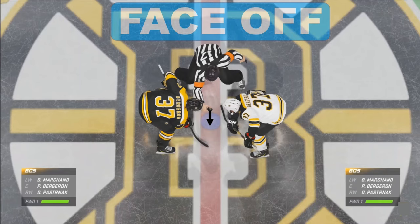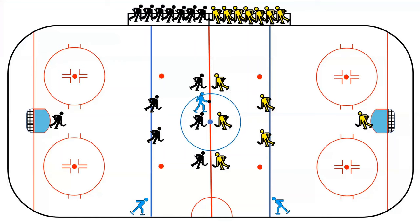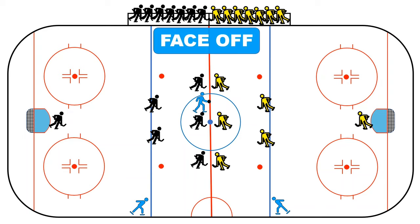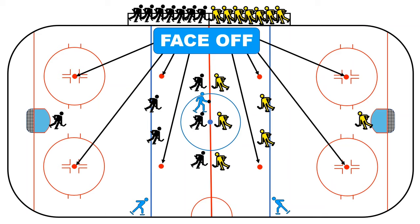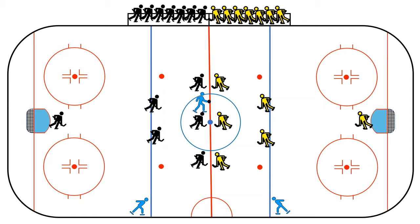There are multiple spots on the field where a face-off can happen. The eight big red dots are where face-offs can happen during certain situations. At the beginning of a game or after a goal is scored, the face-off happens at the blue dot at the center of the field. The referee drops the puck and the game goes on.